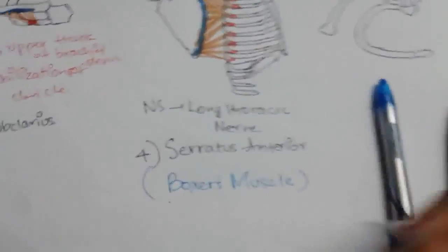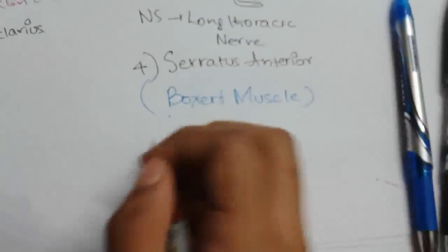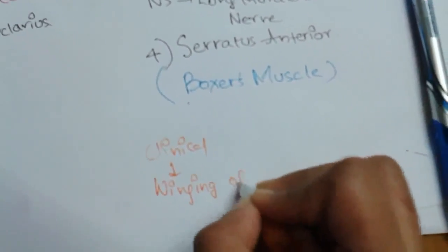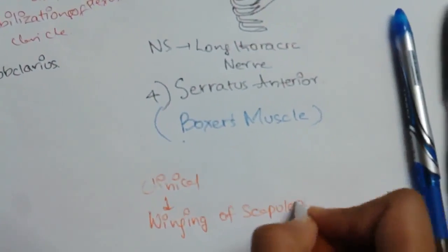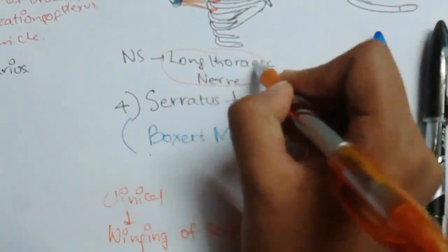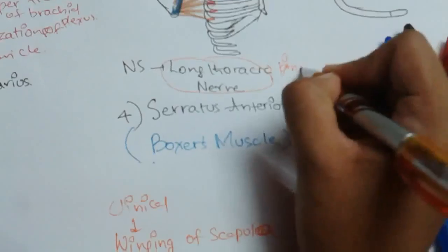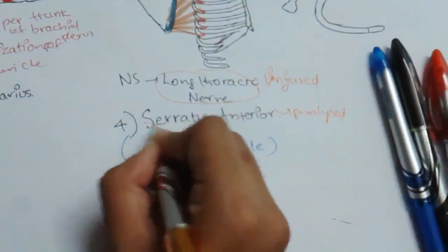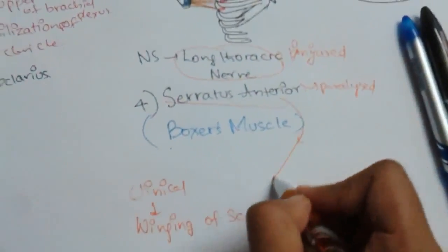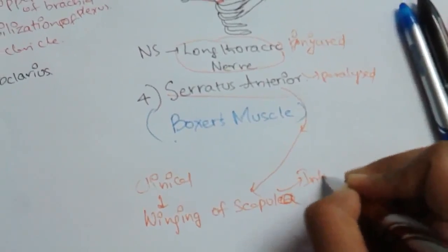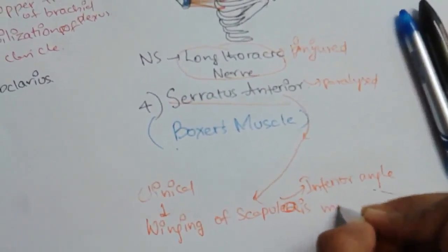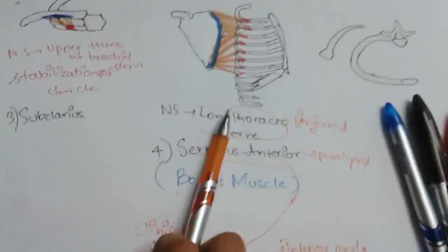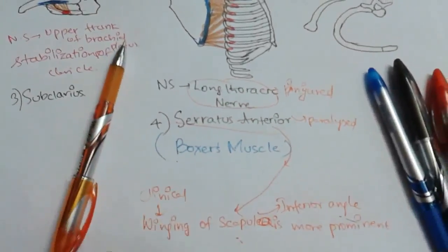The main clinical aspect related to serratus anterior is winging of the scapula. When the long thoracic nerve is injured, the serratus anterior is paralyzed. Paralysis of serratus anterior results in winging of the scapula, in which the inferior angle becomes more prominent, and the person cannot perform pushing and punching movements.